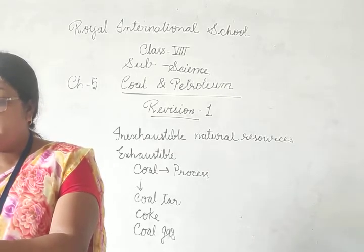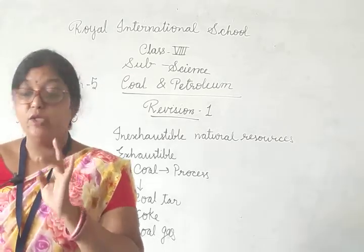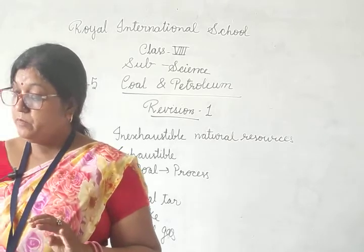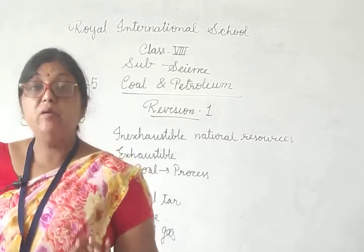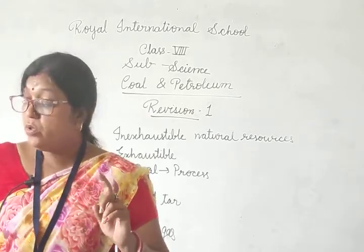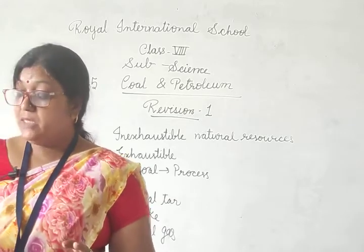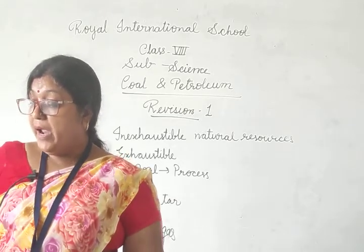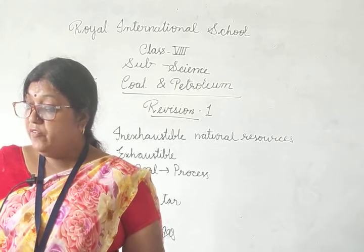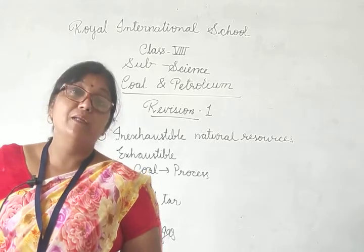Coke is obtained by the destructive distillation of coal. It burns easily — it is tough, black, and porous — but it does not produce smoke like coal. It is used in the manufacture of steel and extraction of metals, making artificial graphite, and some fuel gases like water gas.